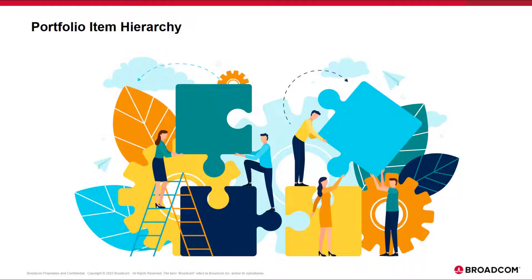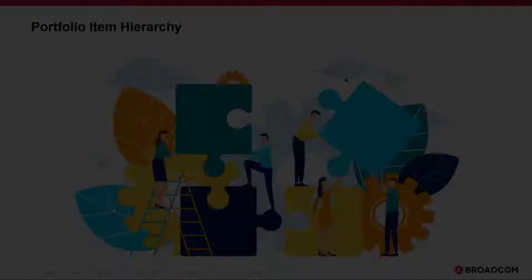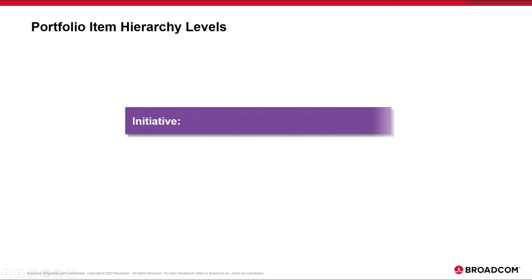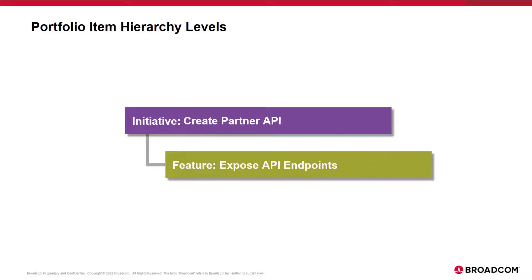The portfolio items hierarchy in Rally models the levels of strategic investment that your organization will deliver to customers and stakeholders over time. By default, your subscription in Rally has two levels in the portfolio hierarchy: initiative and feature. The number of levels in your portfolio and their names are all customizable. Align with other organizations in your Rally workspace to identify the number of levels that you want to model and to choose the names you want to give them. We're going to use the default names when referring to portfolio items in this training, but the names that your organization uses might be different.